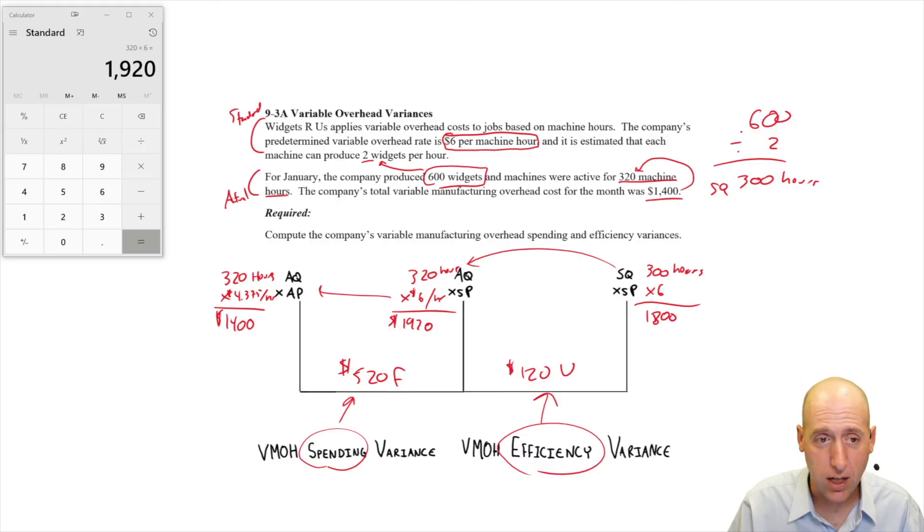This is worth investigating. Why were we so favorable on the spending side? Just fewer overhead costs, what happened there? We would want to know. And certainly it took us less time to make the widgets than normal, and we would want to know why. So these are both things, if you're imagining the company, you ought to be curious about.